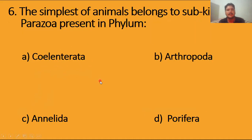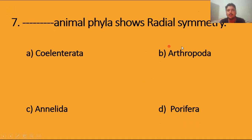The simplest of animals belongs to subkingdom Parazoa present in phylum Porifera. Parazoa is Porifera and the simplest most primitive, so option D is the right answer. Blank animal phyla show radial symmetry. Single animal phyla is Cnidaria or Nidarians, so option A is the right answer.